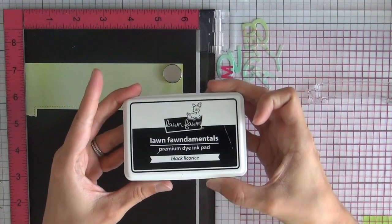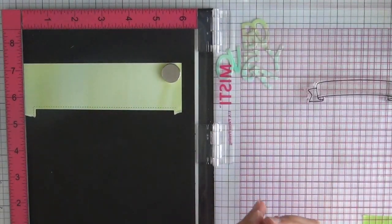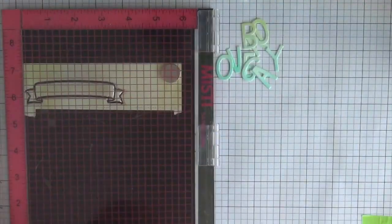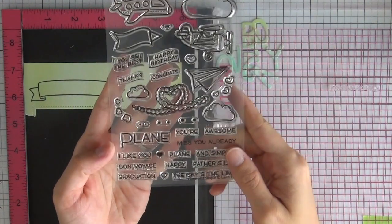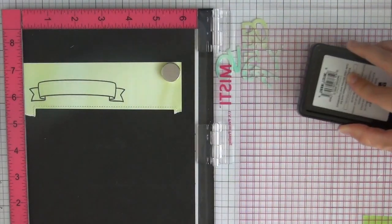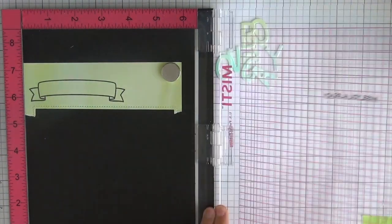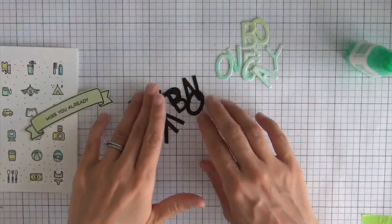The last part of my sentiment is going to be this banner, which is from Bannertastic. I'm going to stamp that on some Watercolor Wishes patterned paper, and then I'll be using this Miss You Already sentiment from Plain and Simple. I'm going to stamp that in some black ink and then use the coordinating die to die cut out the banner.